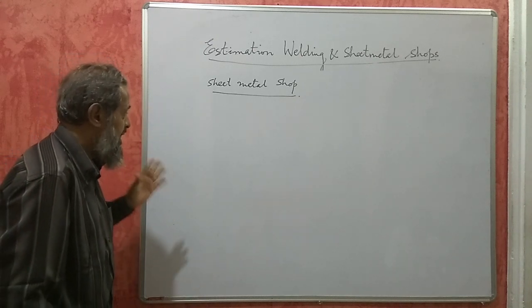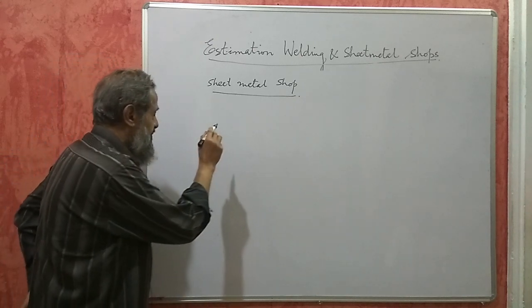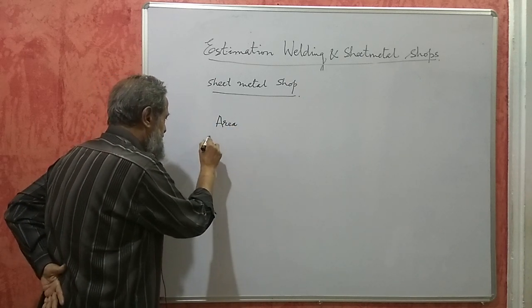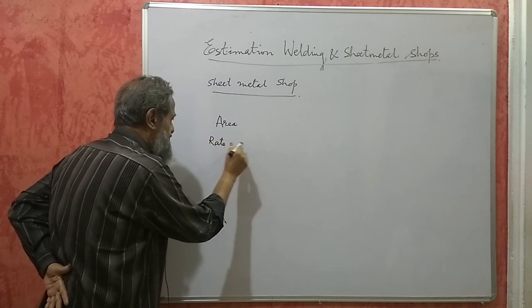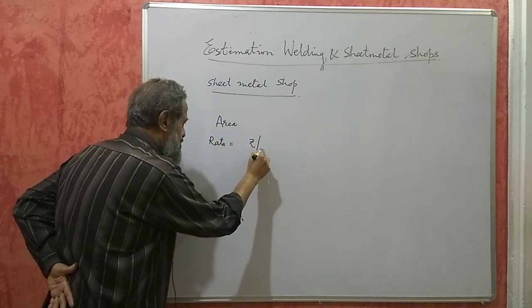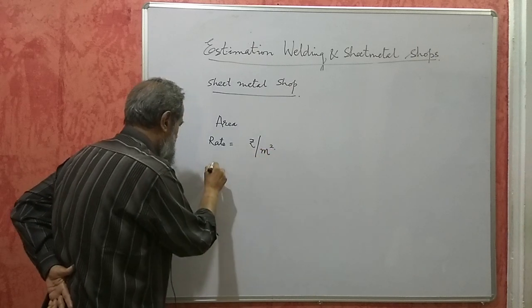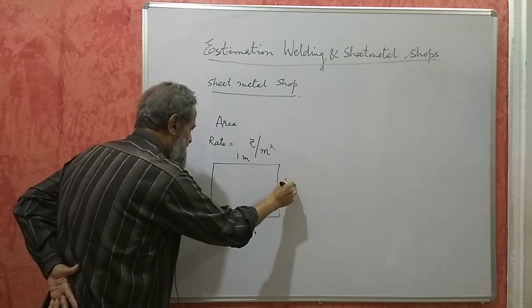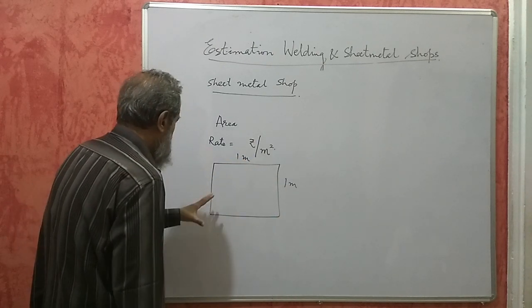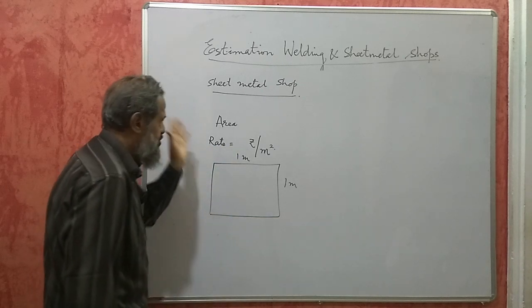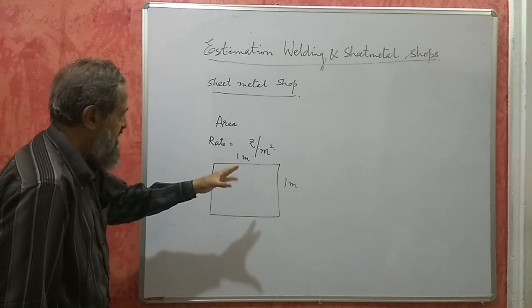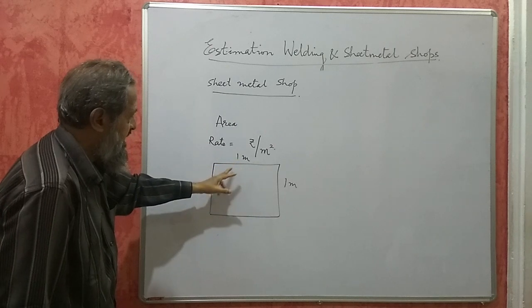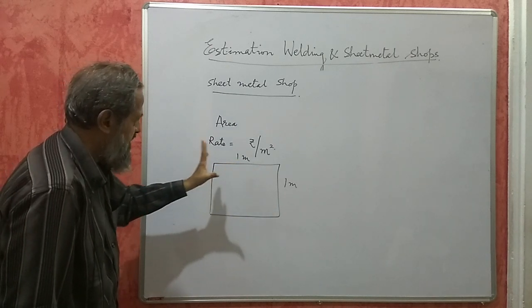This sheet is sold not by weight, but by area. The rate of the sheet will be so many rupees per square meter — that is 1 meter by 1 meter. So the rate will be given as rupees per square meter, not per kg, as in a welding shop.